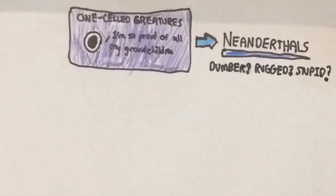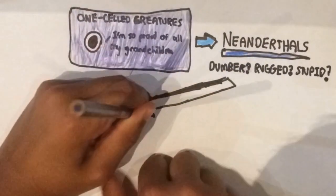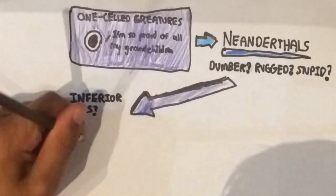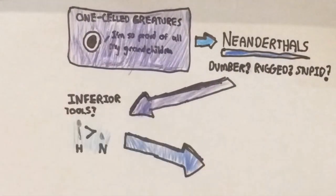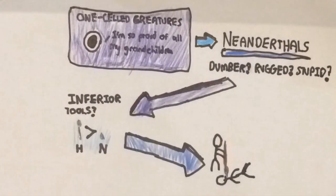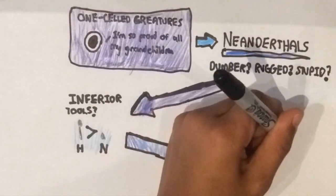One of our more recent descendants, the Neanderthals, has often been thought of as the inferior species, the dumber, more rugged race. Many people stated that the Neanderthals had worse tools, so they went extinct,